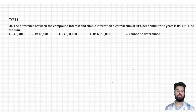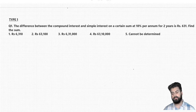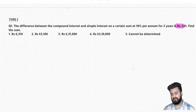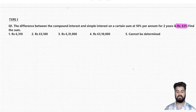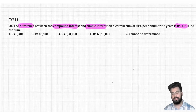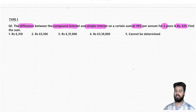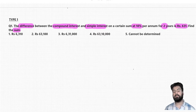Today we will focus on solving different types of problems. Let us first start with type 1. Read the question once: the difference between the compound and simple interest on a certain sum at 10% per annum for two years is rupees 631. So 631 is the difference between compound and simple interest on a certain principal at 10% per annum for two years, and we have to calculate the value of the sum — that is, we have to find the principal.